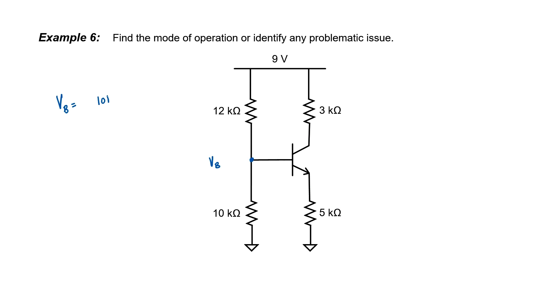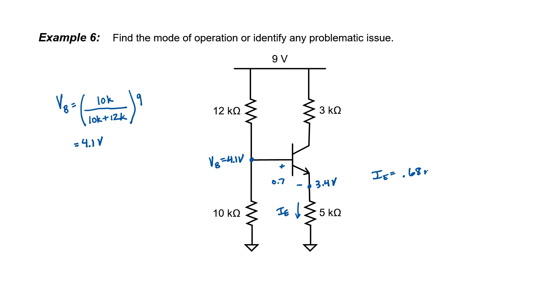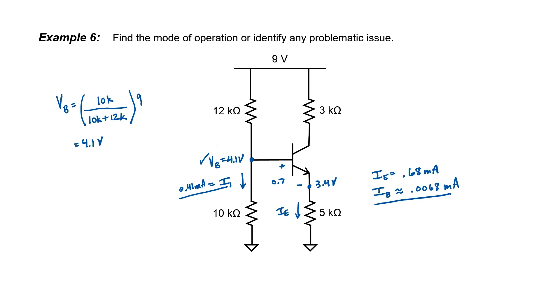Let's look at one more example. We have a voltage divider at the base — the voltage divider causes the voltage to be 4.1 volts. Let's assume a forward biased base emitter junction and, subtracting 0.7 from 4.1 volts, we wind up with 3.4 volts at the emitter. Since it's a positive voltage, current is going to flow in the correct direction through the 5 kilo ohm resistor, and this transistor is not in the cutoff mode. Taking 3.4 volts divided by 5000, I find the emitter current is 0.68 milliamps. Dividing by 100 to estimate the base current, and comparing it to the current I1 through the 10 kilo ohm resistor of 0.41 milliamps, I can conclude that the base current is negligible.